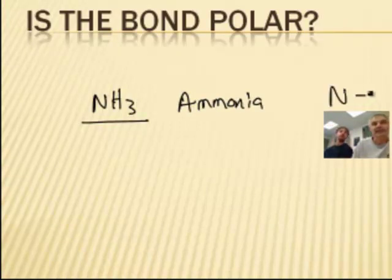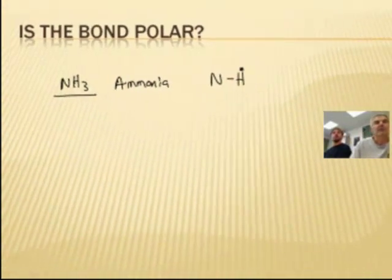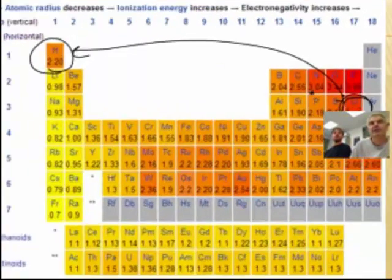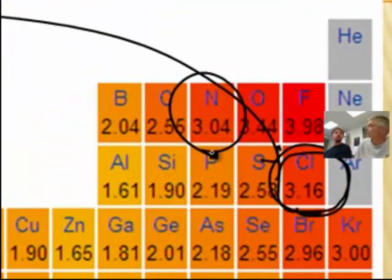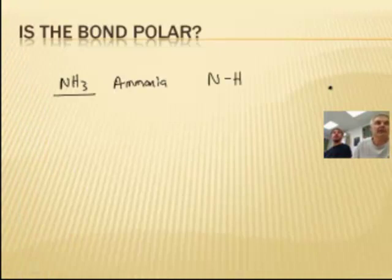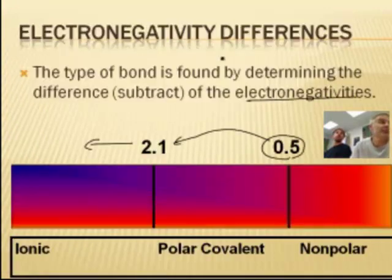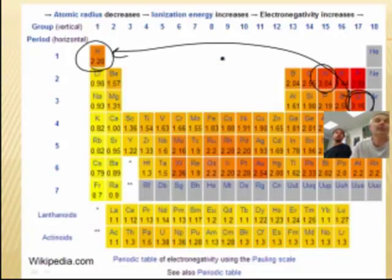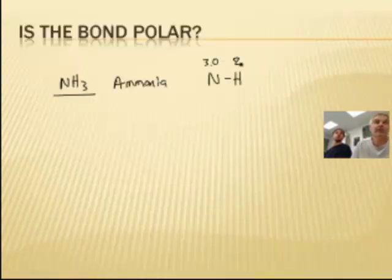Now the ammonia, we're actually going to just look at the N to H bond. So if I find nitrogen and hydrogen, nitrogen here is 3.04. I think we should just round to the nearest tenth. Okay, that's fine. So 3.0? That's 3.0. So I'm going to just go back and label this as 3.0, and the hydrogen was 2.1, I think, 2.2. So this is 2.2.